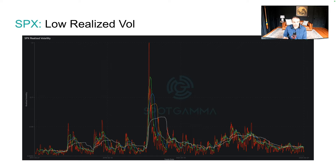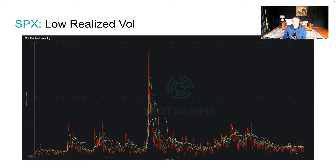Let's start with S&P 500 realized volatility. What you see here in green is one-month SPX realized volatility. And as you can see, it is at lows.